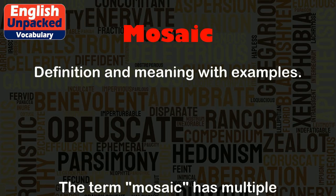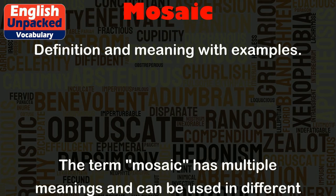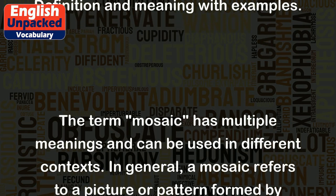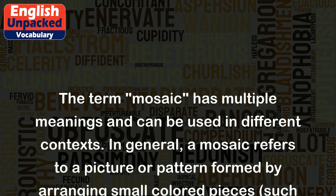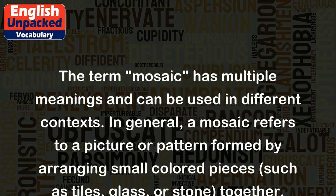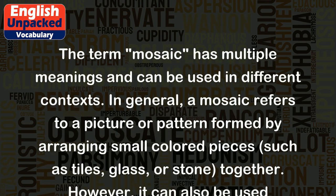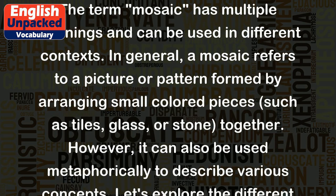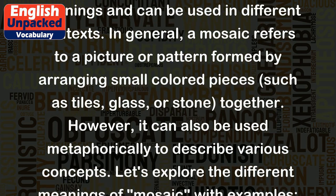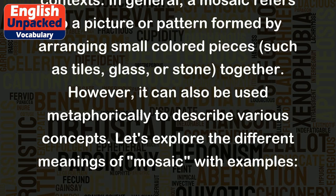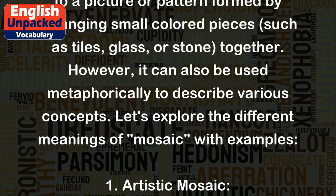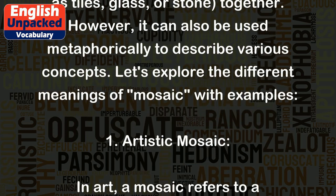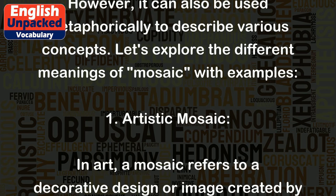Mosaic. The term 'mosaic' has multiple meanings and can be used in different contexts. In general, a mosaic refers to a picture or pattern formed by arranging small colored pieces, such as tiles, glass, or stone, together. However, it can also be used metaphorically to describe various concepts. Let's explore the different meanings of 'mosaic' with examples.